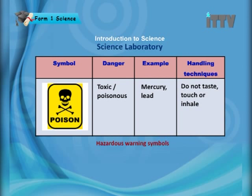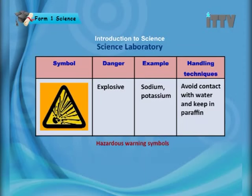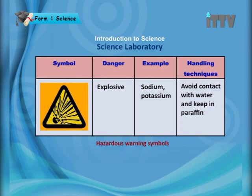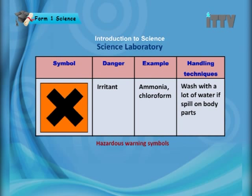Inhaling or touching toxic substances can also spread the poison. The explosion symbol warns of chemicals that can explode — examples include sodium and potassium. Avoid contact with water and keep them in paraffin oil. The irritant symbol warns of substances such as ammonia and chloroform. If you touch or spill them on body parts, wash with a lot of water.